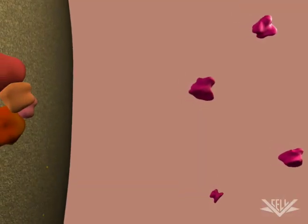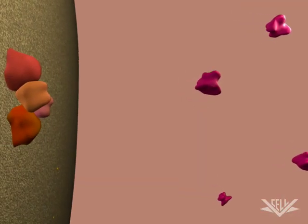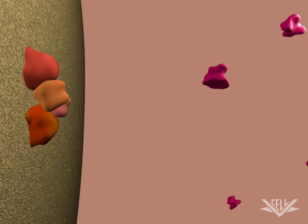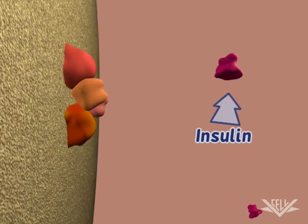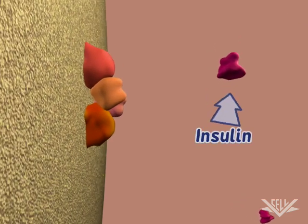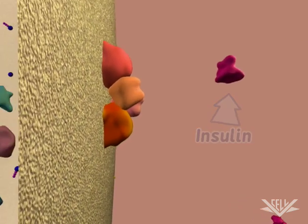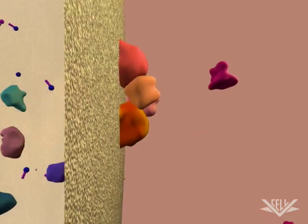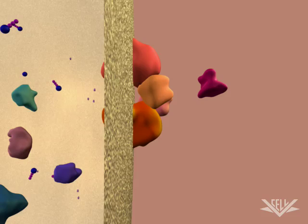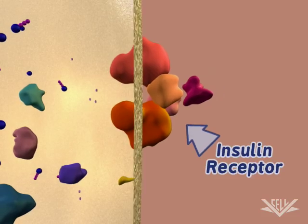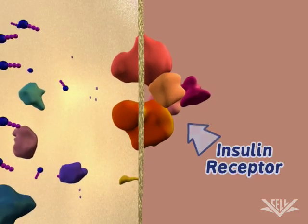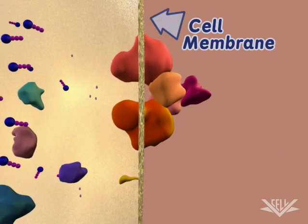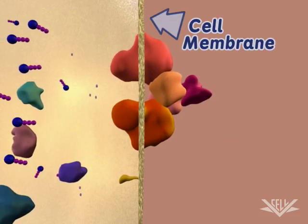When high levels of glucose are detected by beta cells in the pancreas, insulin is released by those cells. The insulin circulates through the bloodstream until it binds to an insulin receptor embedded in the cell membrane of a muscle, fat, or brain cell.